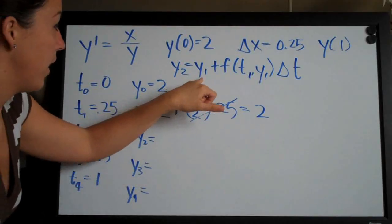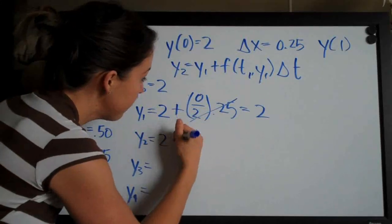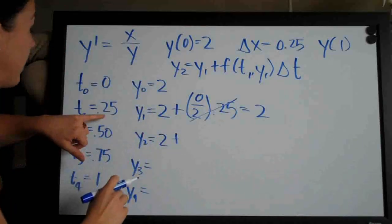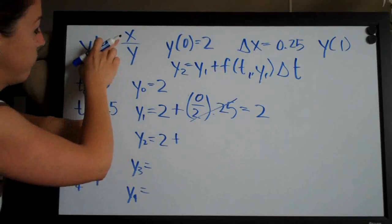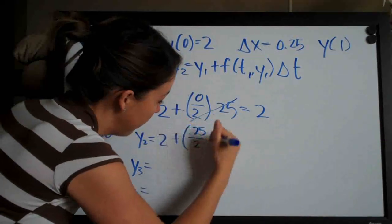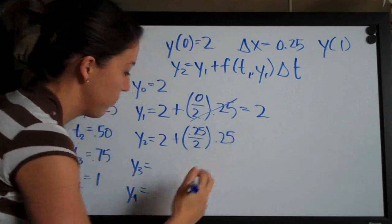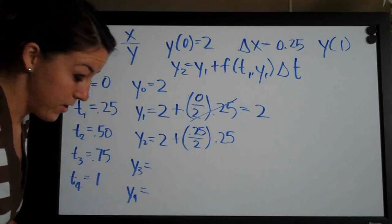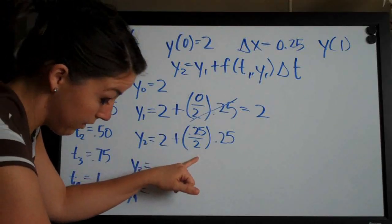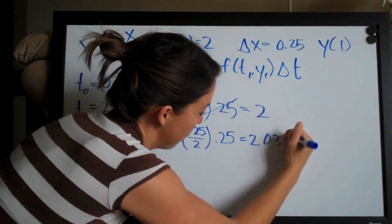So y of 2, you can see here we have used y of 1, which we solved for in the previous step. So again, 2 plus - now we're plugging in t1 and y1 to the original function. So we plug in 0.25 for x and 2 for y. So we have 0.25 over 2, and we're multiplying that again by delta t, which is 0.25. So now you're going to have to bust out your calculator. When you do this math here, what you're going to get is 2.03125.